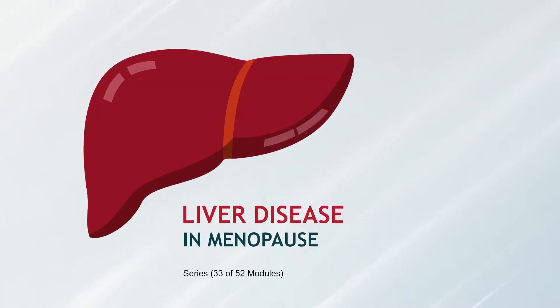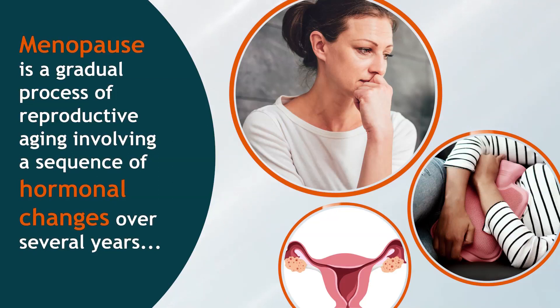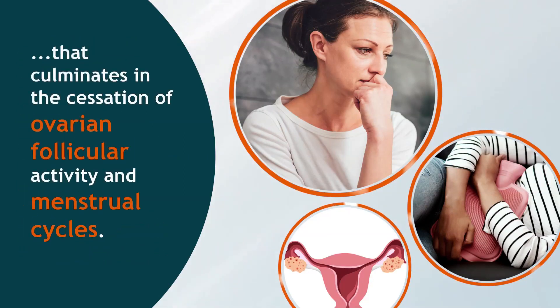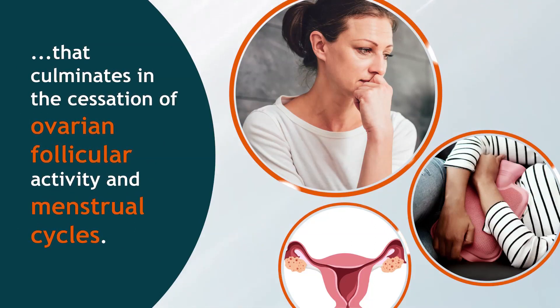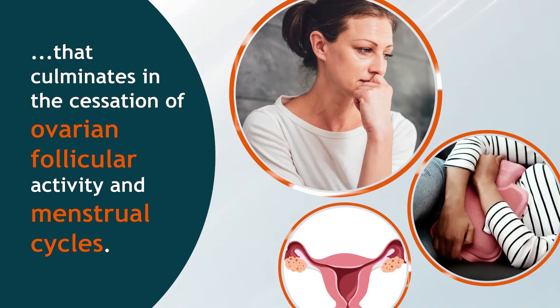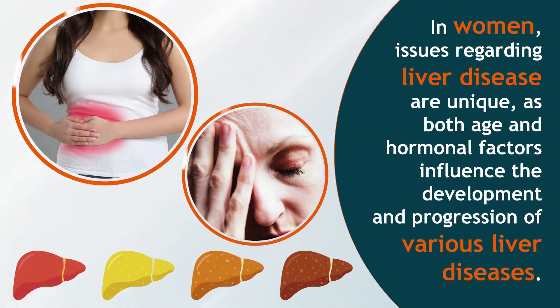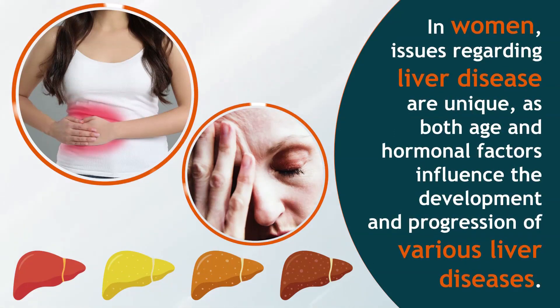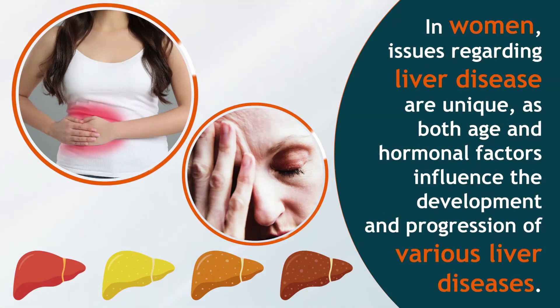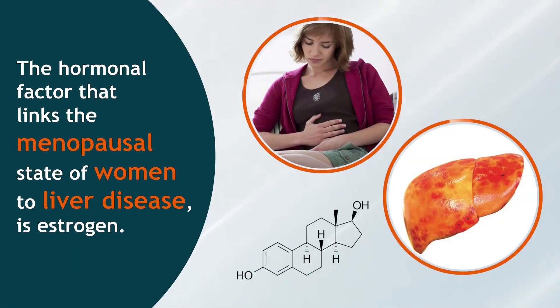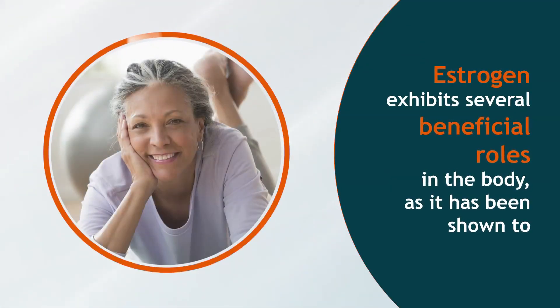Liver disease in menopause — introduction. Menopause is a gradual process of reproductive aging involving a sequence of hormonal changes over several years that culminates in the cessation of ovarian follicular activity and menstrual cycles in women. Issues regarding liver disease are unique, as both age and hormonal factors influence the development and progression of various liver diseases. The hormonal factor that links the menopausal state of women to liver disease is estrogen.